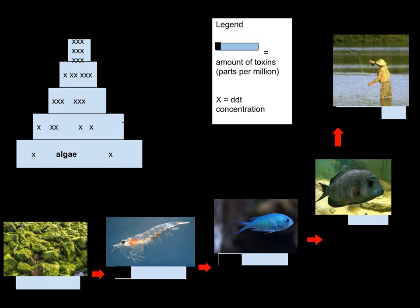Biological magnification often refers to the process whereby certain substances such as pesticides or heavy metals work their way into lakes, rivers, and the ocean, and then move up the food chain in progressively greater concentrations as they are incorporated into the diet of aquatic organisms such as zooplankton, which in turn are eaten perhaps by fish, which then may be eaten by bigger fish, large birds, animals, or humans. The substances become increasingly concentrated in tissues or internal organs as they move up the chain.